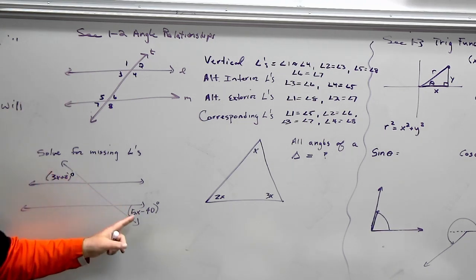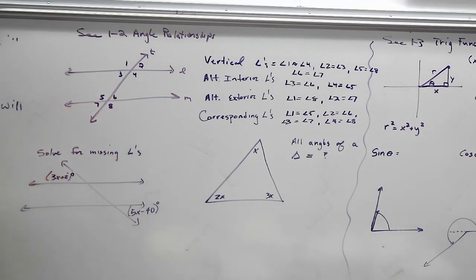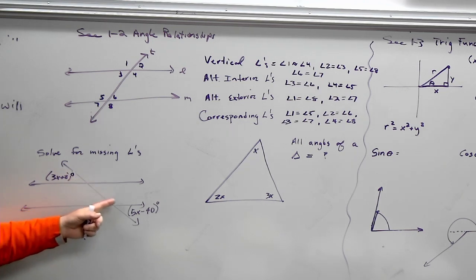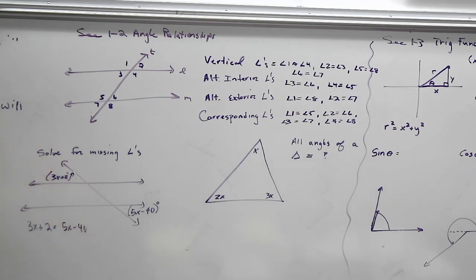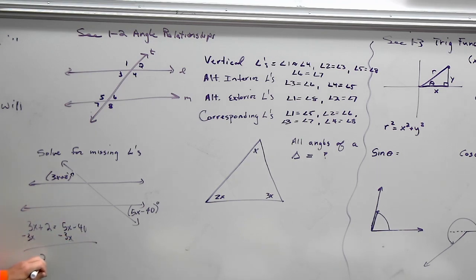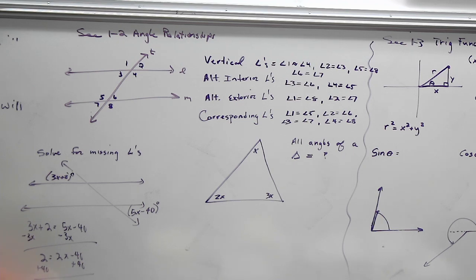These two angles are alternate exterior angles, and we know they're equal. You could probably just look and say they're both acute and probably the same angle. Just like we did before, set them equal to each other and solve for x. They're equal by alternate exterior angles. So: 2 equals 2x minus 40. Add 40 to both sides: 42 equals 2x. Divide by 2: x equals 21.